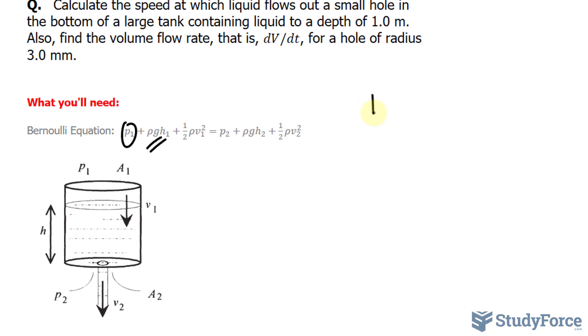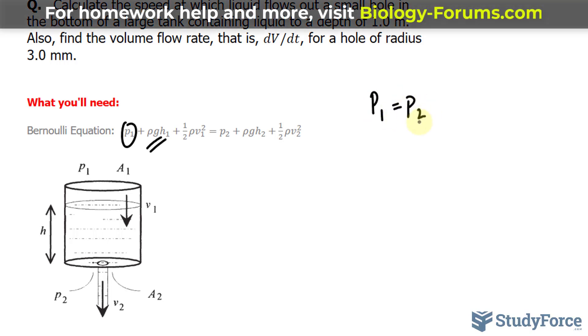So if P1 and P2 are equal, then we can kind of cancel them out of this equation completely. I mean, algebraically, you can bring one over to the other side and they'll cancel out because they are the same.